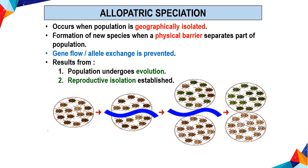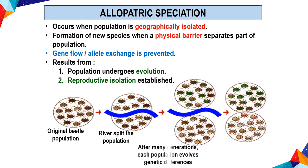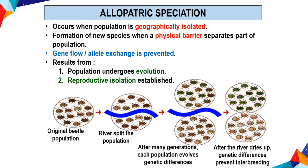Example of allopatric speciation: starting from an original beta population, when a river arises, the river splits the population. After many generations, each population develops genetic differences. After the river dries up, the genetic differences prevent interbreeding.